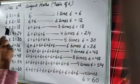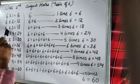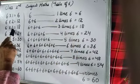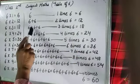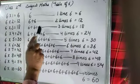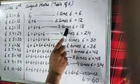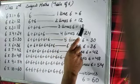6 3s are 18. It means there is 3 times 6 — 1 times 6, 2 times 6, 3 times 6. 3 times 6 is equal to 18.